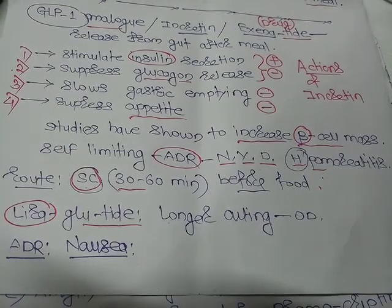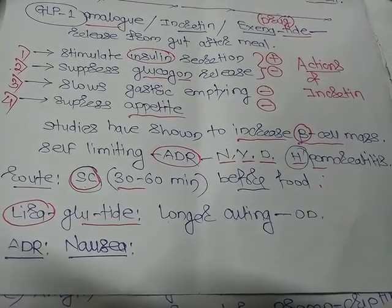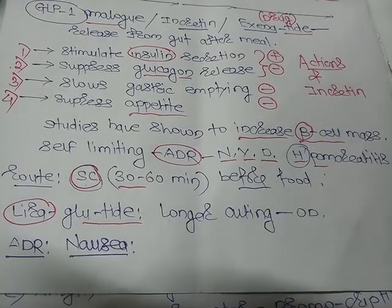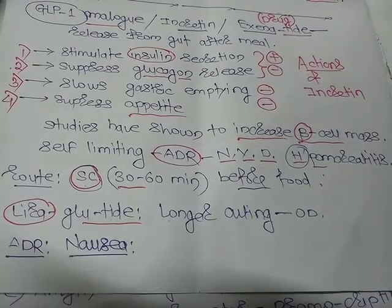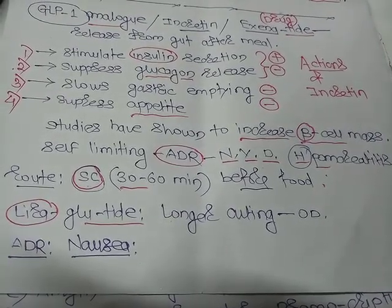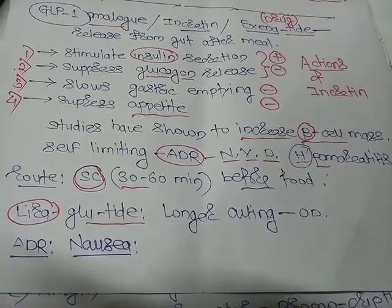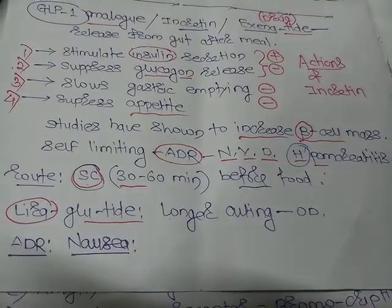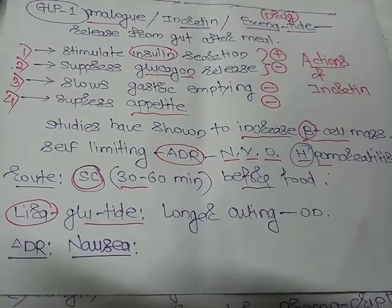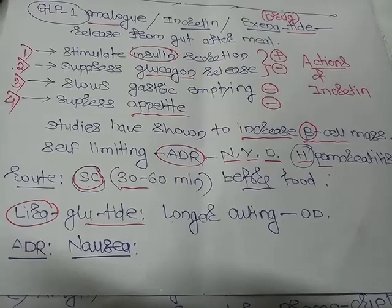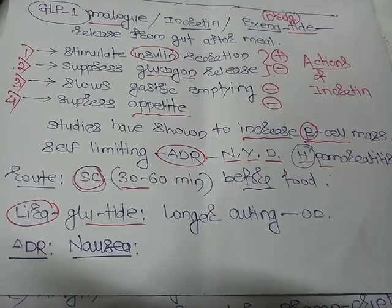This GLP-1 analog like exenatide is not given orally. The preferred route for exenatide is subcutaneous, administered 30 to 60 minutes before food or before a meal.